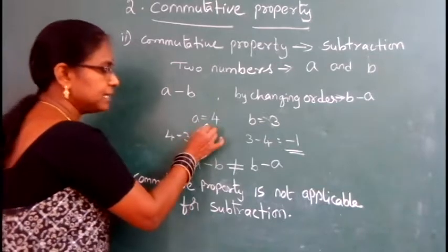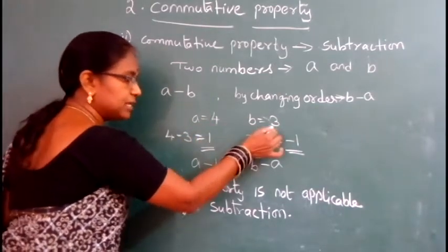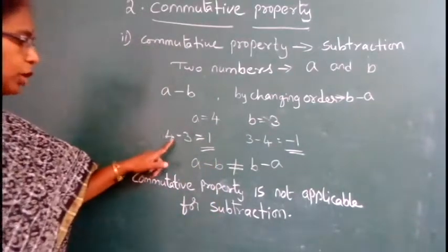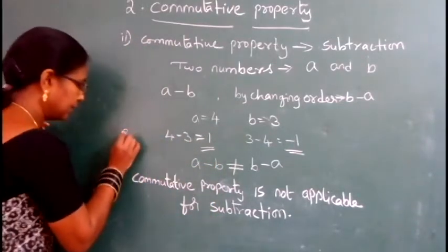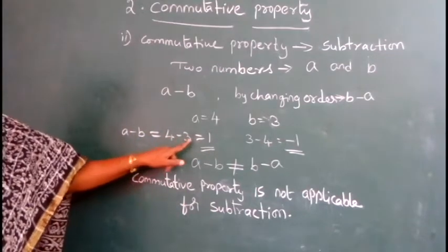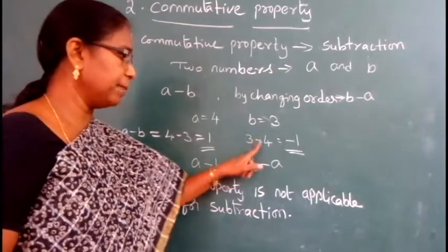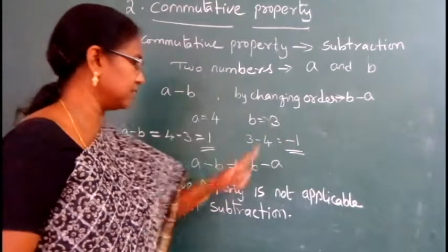for example, a is equal to 4, b is equal to 3. 4 minus 3, a minus b is equal to 4 minus 3 is equal to 1. But b minus a, 3 minus 4 is equal to minus 1.